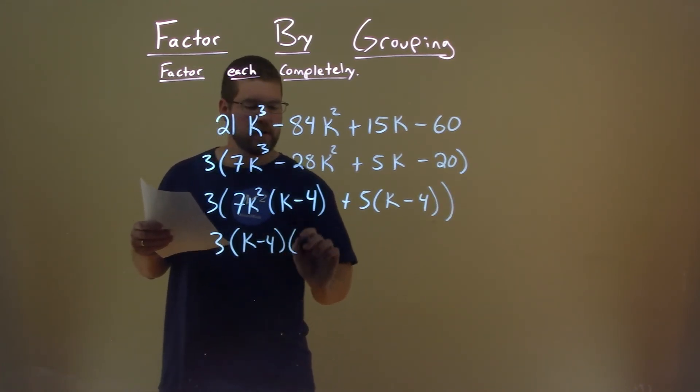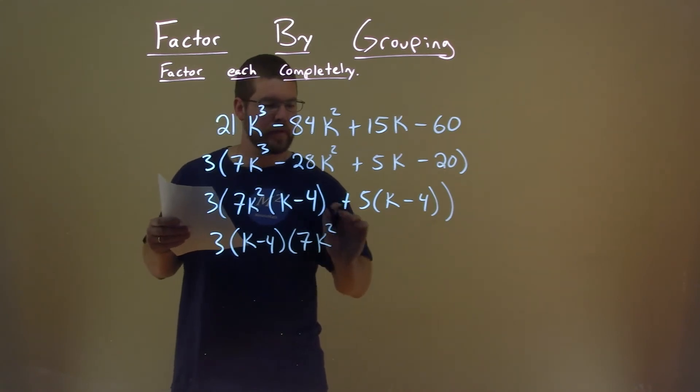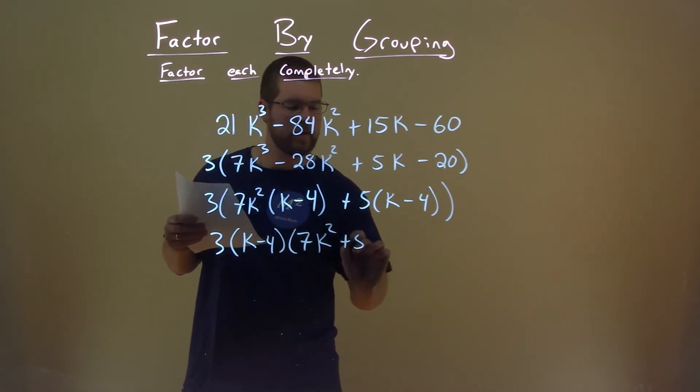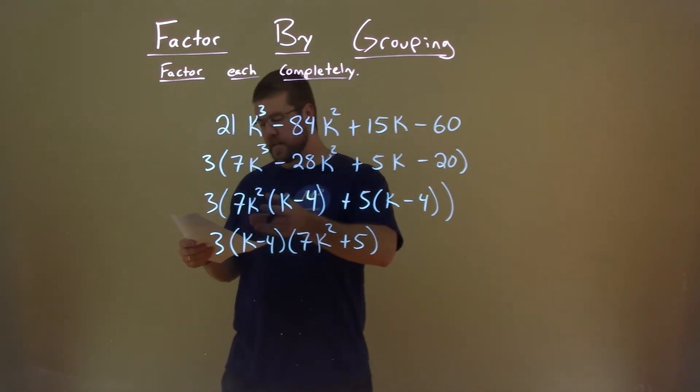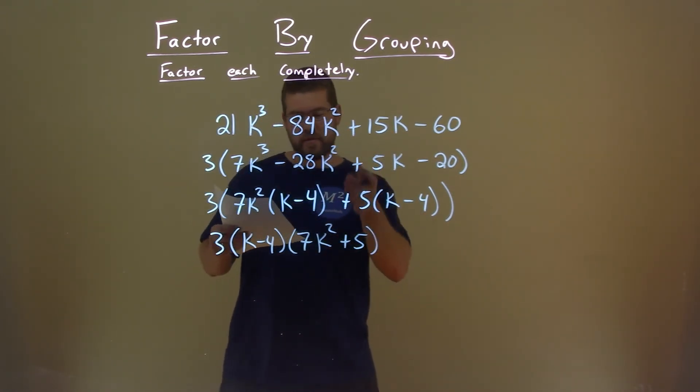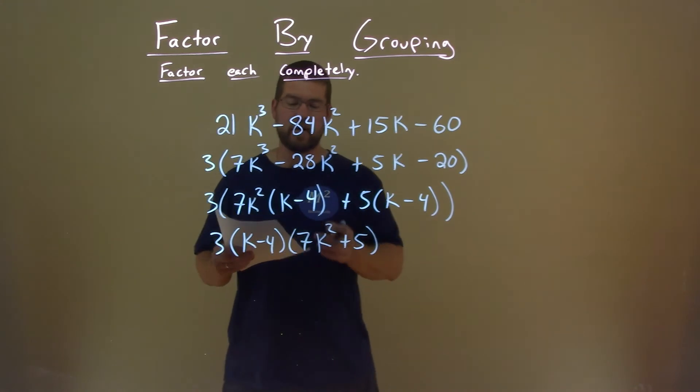what are we left with? Just that 7k² and then plus the 5. And there we actually have our final answer: 3(k - 4)(7k² + 5).